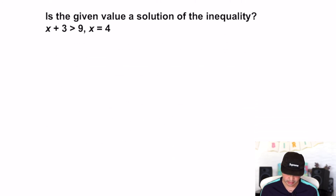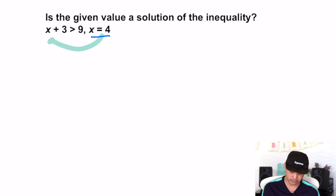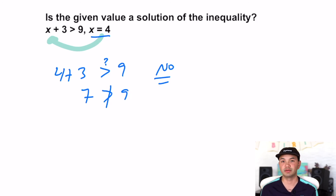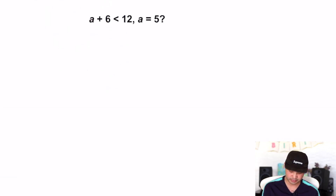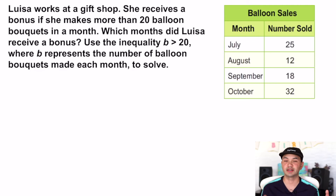It says: is the given value a solution of the inequality? So it says x equals four — that looks like an answer but these are inequalities, so it's a yes or no answer. Plug in: four plus three — is that greater than nine? Seven is not greater than nine, so you put a slash through it. Four is not a solution to this inequality. Along the same lines, if I plug in five: five plus six — is that less than twelve? Eleven is less than twelve, so yes, it is the solution.